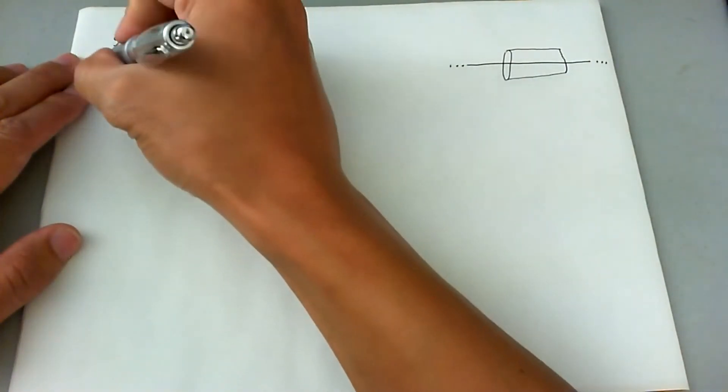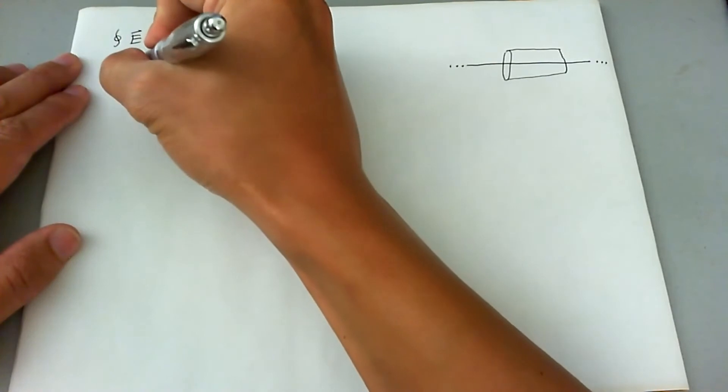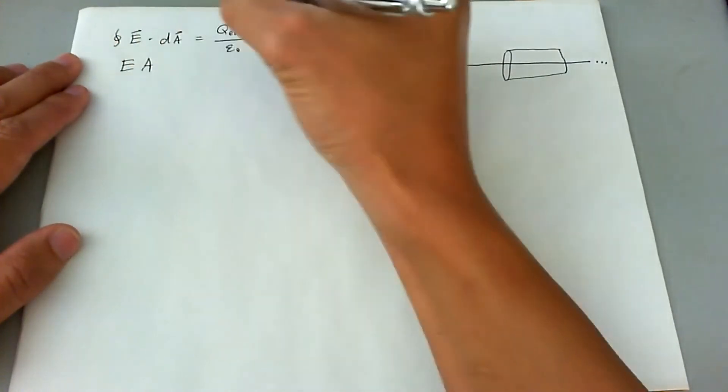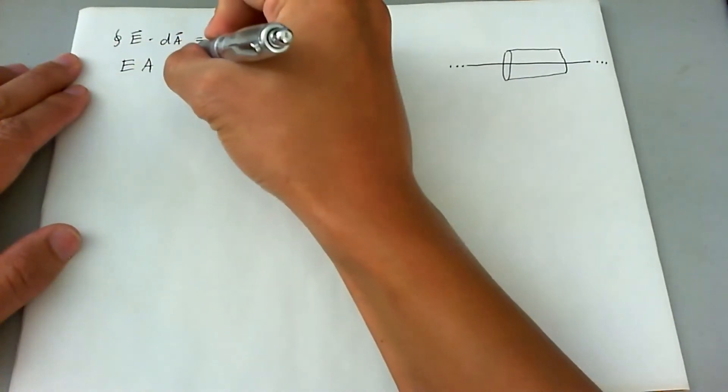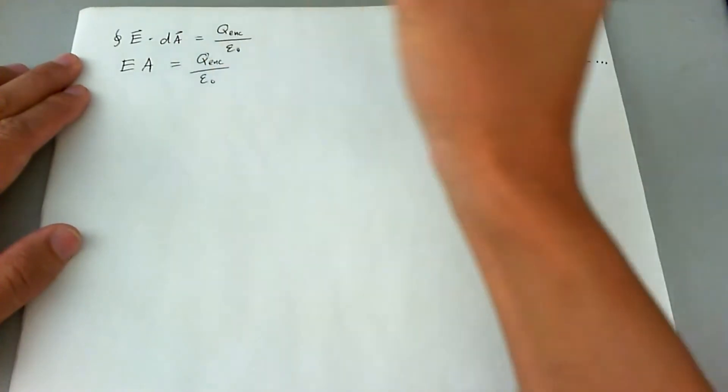So therefore, this integral now becomes simply an algebraic problem, EA. And that's going to equal to Q enclosed divided by epsilon naught.